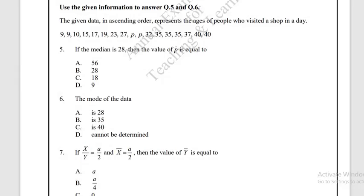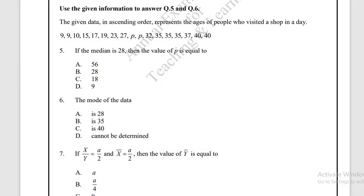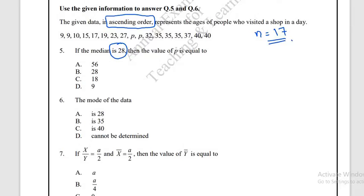Questions 5 and 6: the data in ascending order represents ages of people who visited a shop. The median is given as 28. Counting the terms: there are 17 data values. For ungrouped data, the median is the (n+1)/2 th term, so (17+1)/2 = 9th term. The 9th term equals P, and since the median is 28, P equals 28. So the correct answer for question 5 is 28.